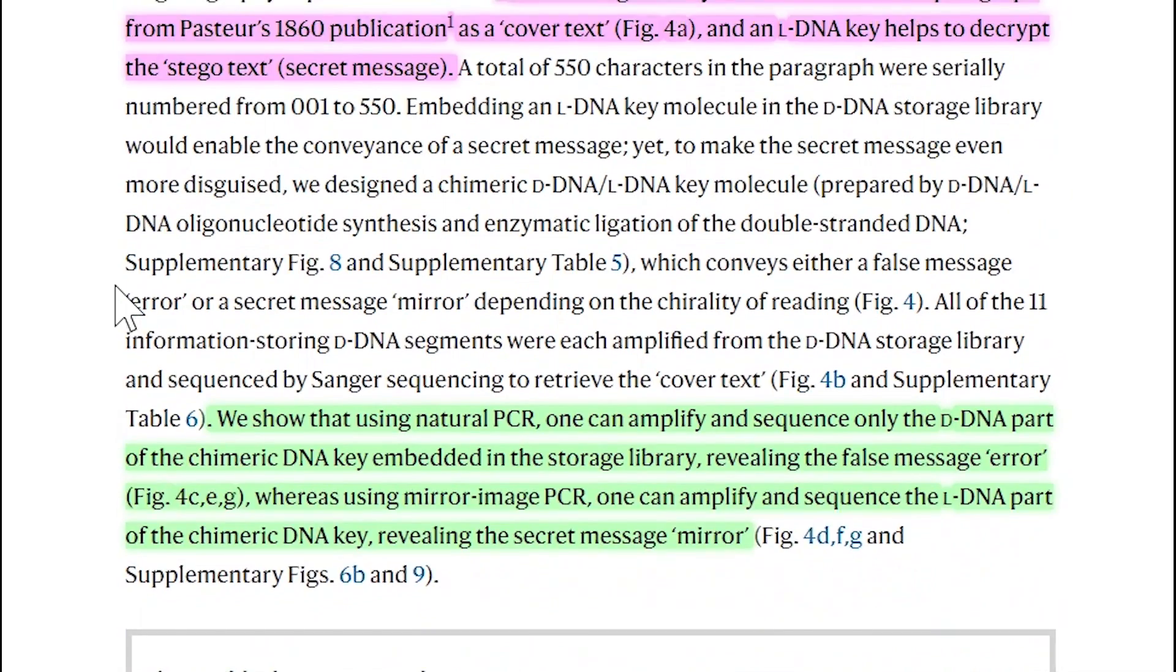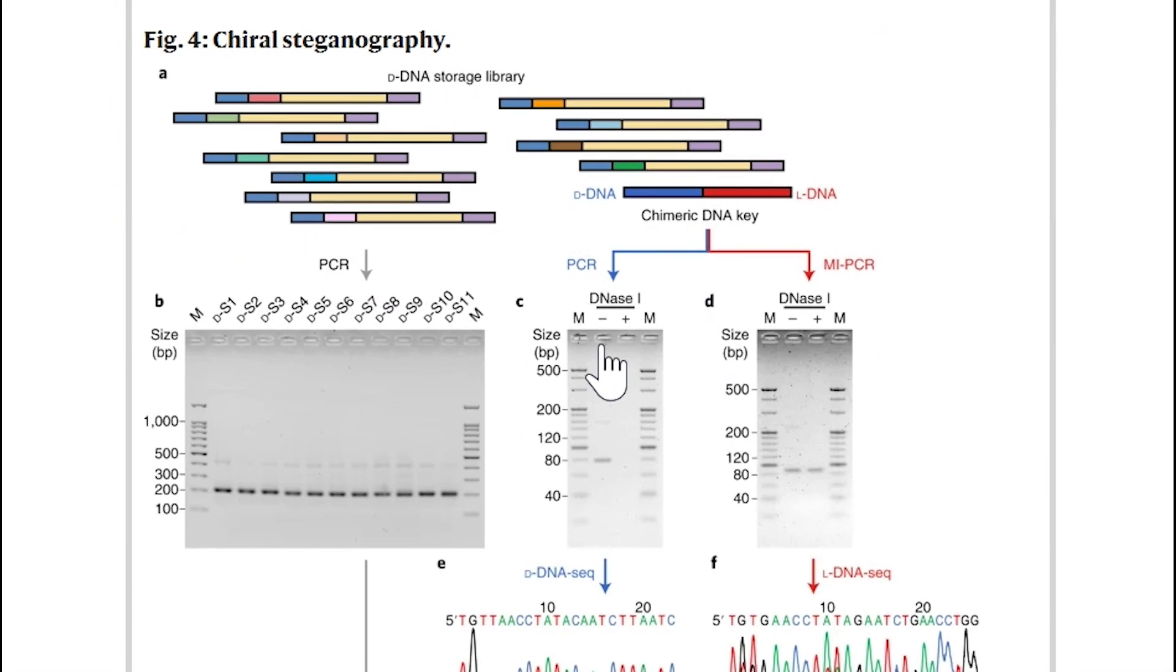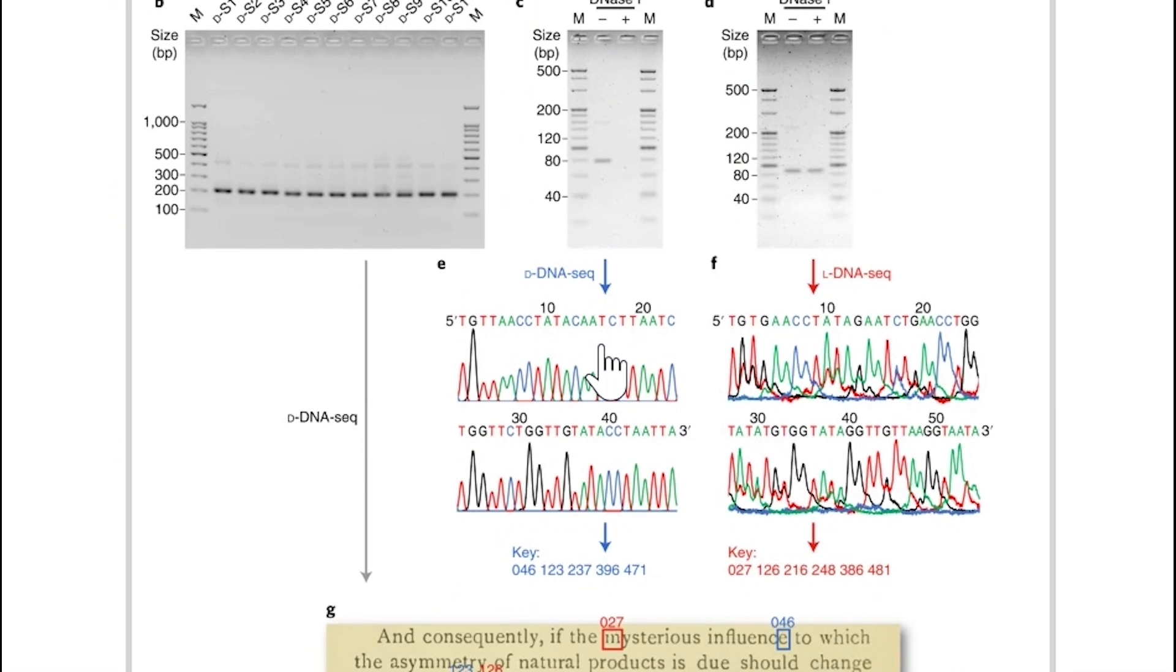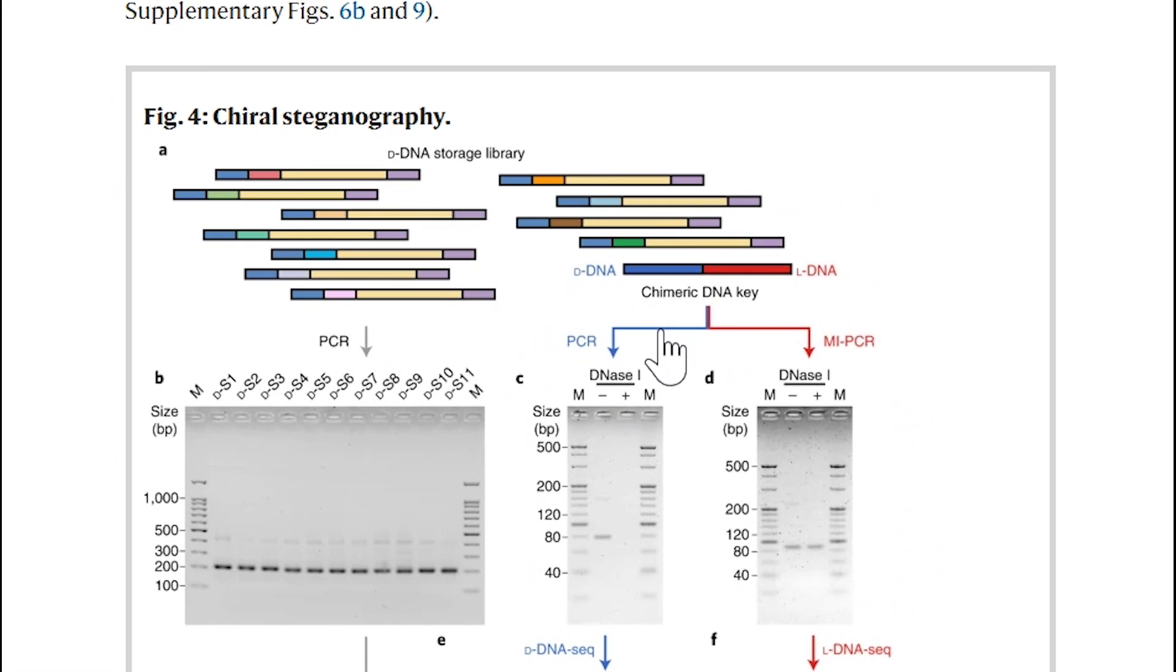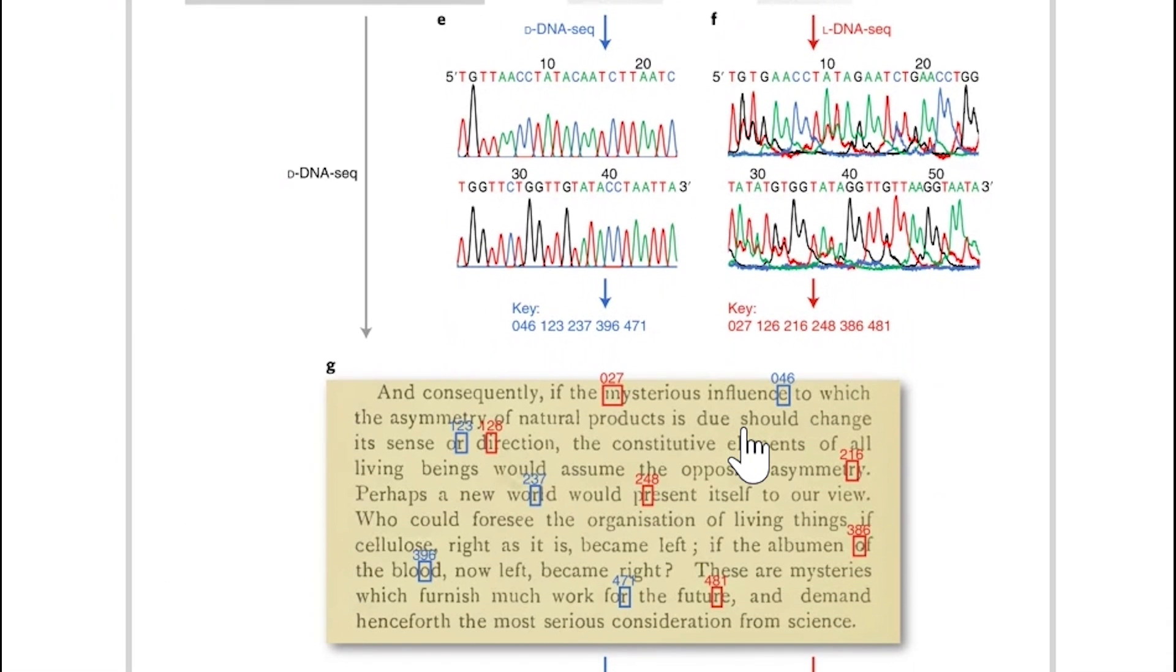And so what they did here is exploit the ability to store information in DNA, but have the D-DNA version encoding the background message with an inserted fragment of L-DNA encoding the hidden message. And so the idea is it's hidden in plain sight. And the reason it's hidden is because L-DNA requires different methods to sequence the DNA sequence.